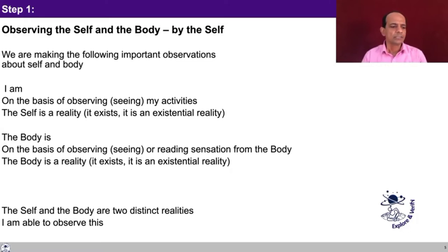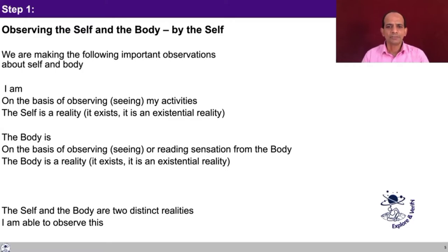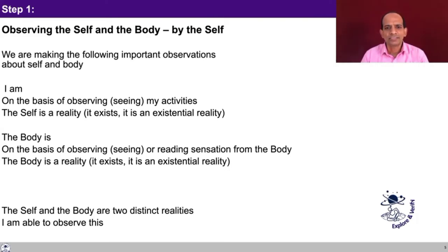One: I am. Two: the body is — and how do I come to know the body is there? On the basis of observing, that is seeing or reading the sensations from the body. The body is a reality, it exists. Now here also, ultimately it is only information that I have received through sensation. Have you been directly able to observe the body? Or by the sensation that you are receiving from the body, you start accepting yes that the body is there. Try to see whether you are there and the body is there — the two are quite distinct realities.